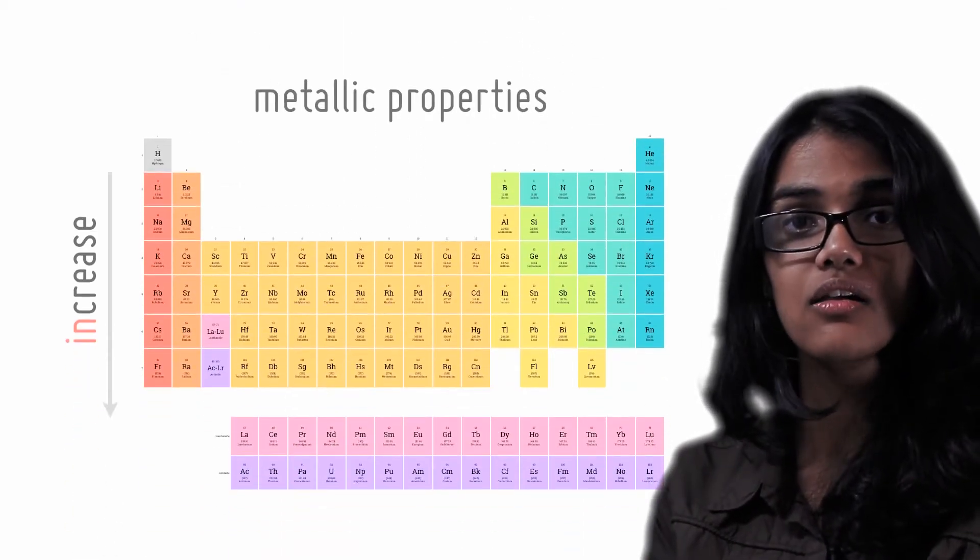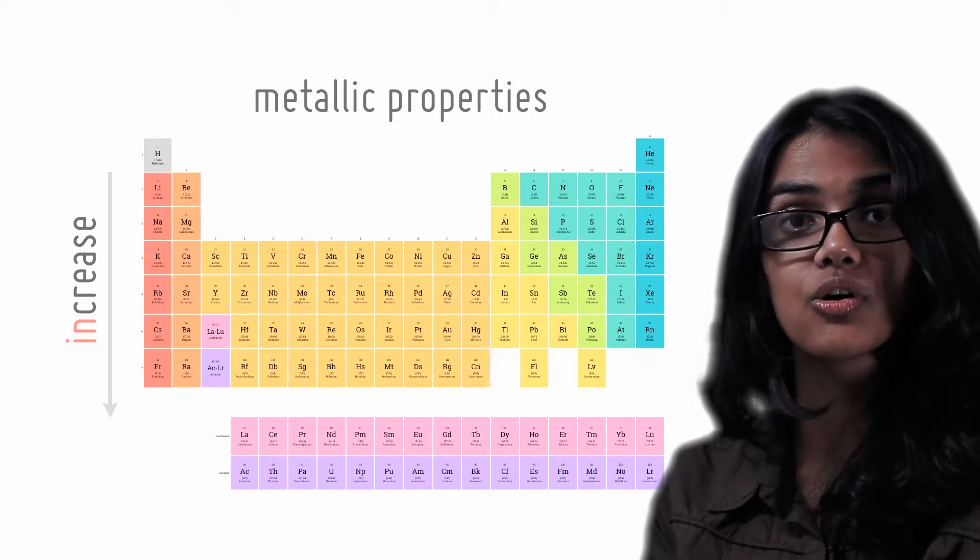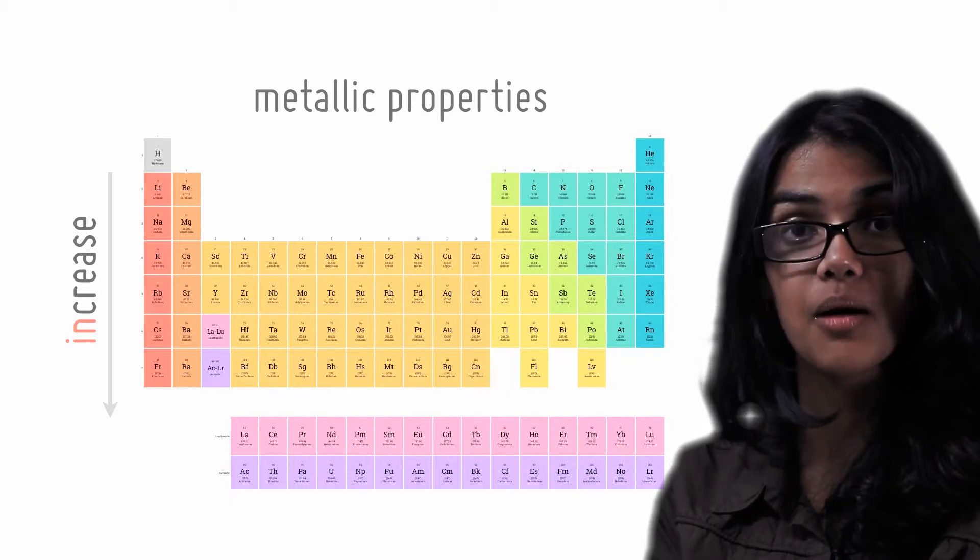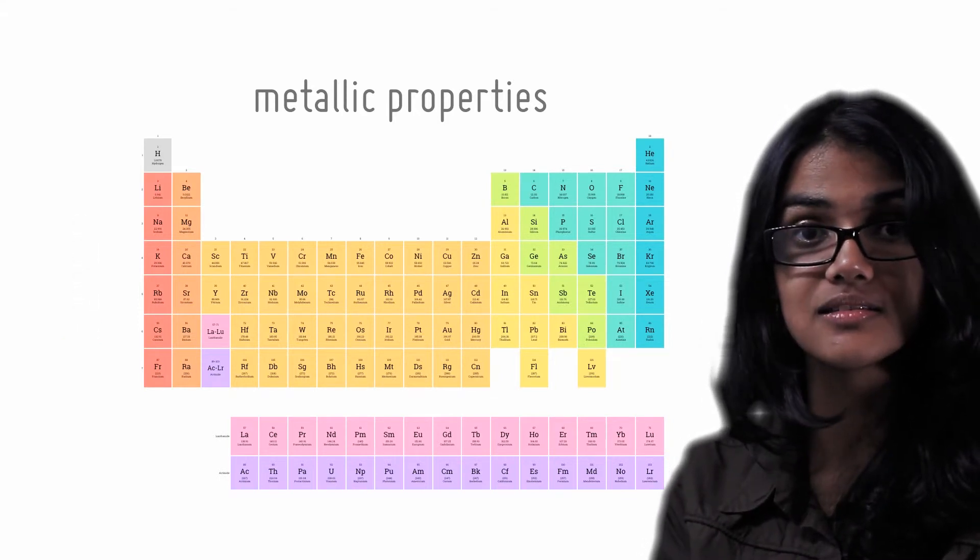When you go down a column, the elements increase in metallic properties. Going down a column also correlates to elements increasing in atomic mass. So the heavier the metal, the more metallic properties that the element possesses.